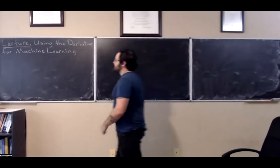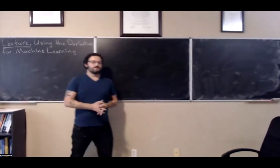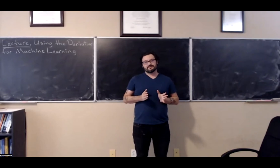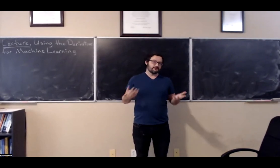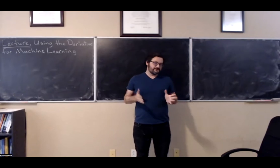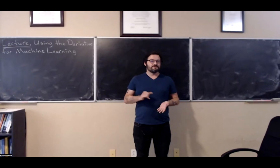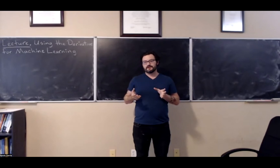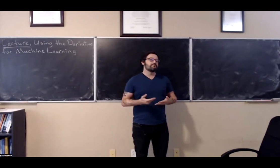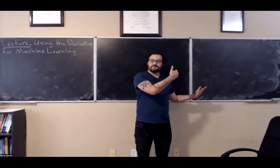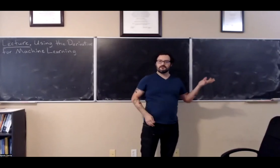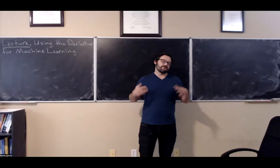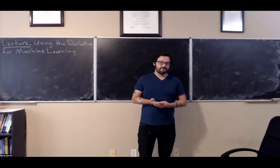Okay, so welcome back. In today's lecture, we're going to use the most basic formulation of what's called stochastic gradient descent, or gradient descent, to solve the most basic formulation of a machine learning model that uses the derivative. The ideas we're going to cover today are the simplest forms of the ideas used for deep neural networks and many other machine learning techniques, but realistically the ideas are the same — it's just that the examples we're doing are going to be very simple.